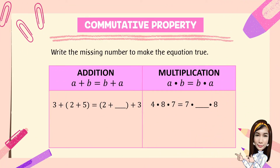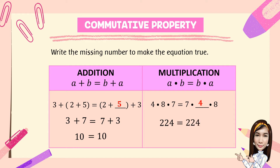Let's try this one. Using commutative property, for addition: 3 plus the quantity (2 plus 5) is equal to the quantity (2 plus blank) plus 3. The answer is 5. To check: 3 plus 2 plus 5 equals 7, then 7 plus 3 equals 10, and also 10. This shows the order of addends does not affect the sum. For multiplication: 4 times 8 times 7 is equal to 7 times blank times 8. The answer is 4. To check: 4 times 8 times 7 is equal to 224, and 7 times 4 times 8 is also equal to 224. This shows the order of factors does not affect the product.